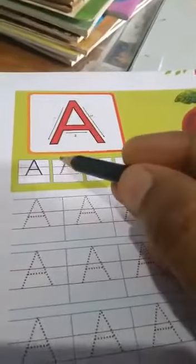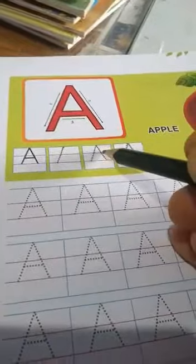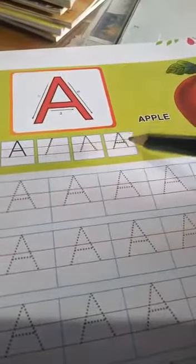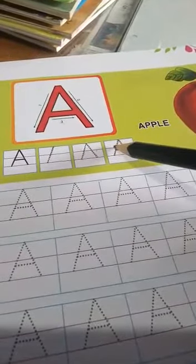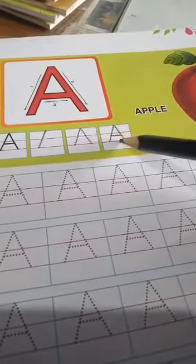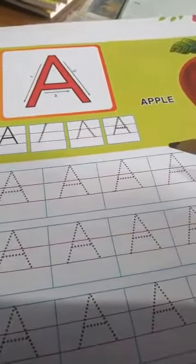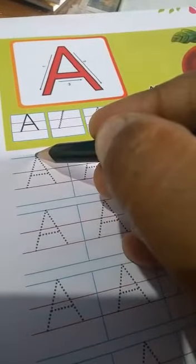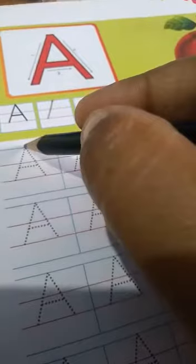Slanting lines help you to write A. Look at here, you see here is one slanting line, the second two slanting lines, and again we write two slanting lines and one sleeping line mix together A.